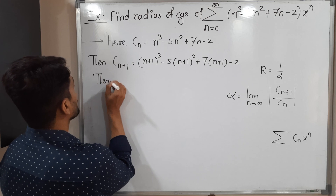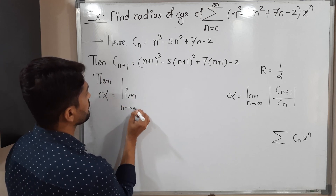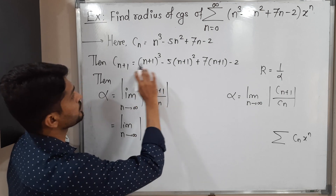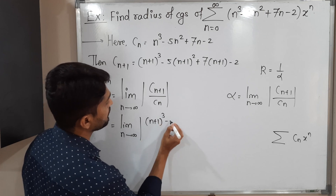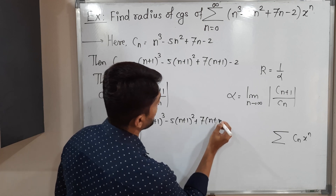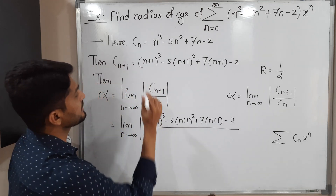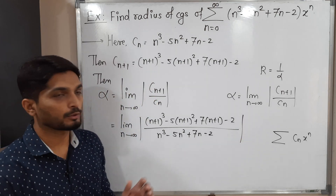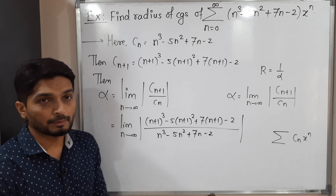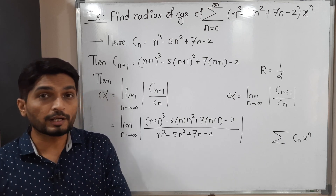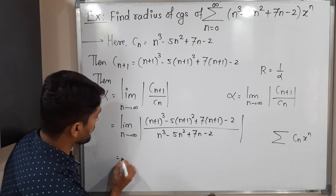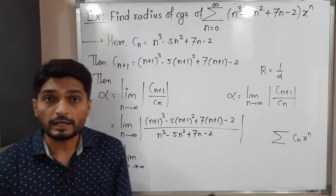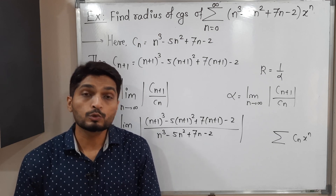Using the formula, α equals limit as n tends to infinity of |cₙ₊₁ upon cₙ|. Putting in the values: the numerator is (n+1)³ minus 5(n+1)² plus 7(n+1) minus 2, divided by cₙ which is n³ minus 5n² plus 7n minus 2. The highest power of n is 3, so I am going to divide numerator and denominator by n³.